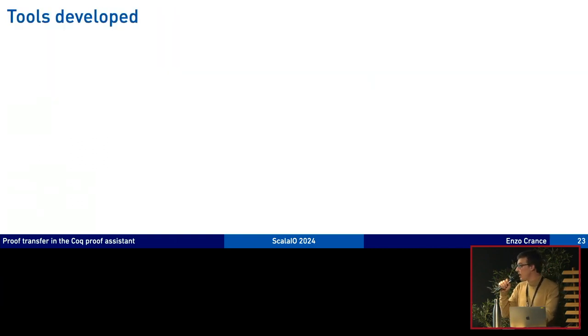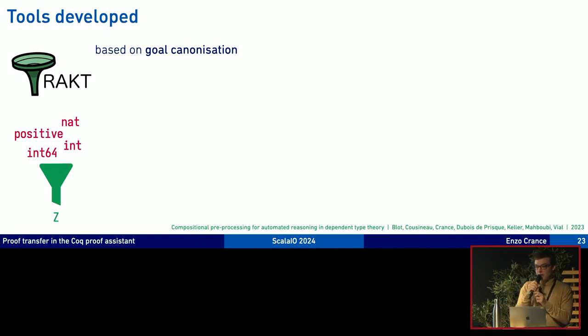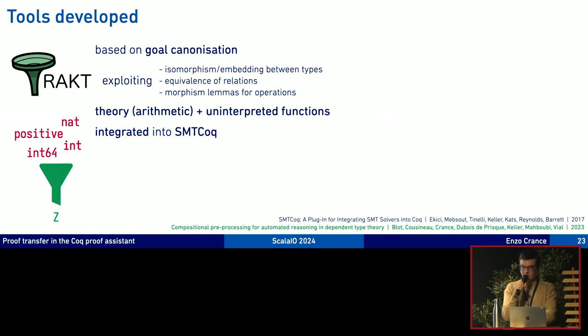This is what I worked on during my thesis and I developed two tools. The first one is called TRACT and it's based on goal canonization. It takes a bunch of encodings, possible encodings for integers, and rewrites the statement we have to prove in the one standard encoding. So Z is the standard binary integer also containing the negative part. Everything is expressed on Z and then we can run automation. It exploits some proofs given of isomorphism or embedding between the source and target type, NAT to Z for example. It works for one theory, arithmetic and uninterpreted functions. It was successfully integrated into SMT Coq.